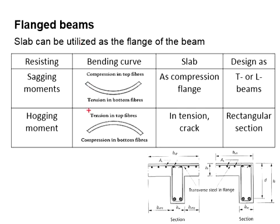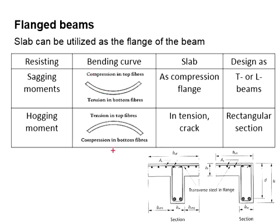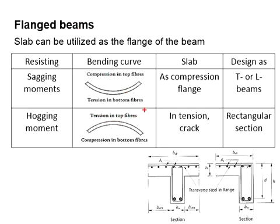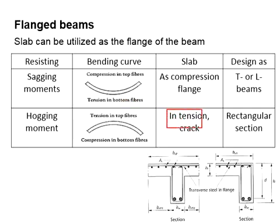The hogging moment is a condition where the beam bends upward. The compression will be below the beam and the tension will be on top of the beam. The slab will be undergoing tension and there will be cracking, so the slab cannot function as a flange.